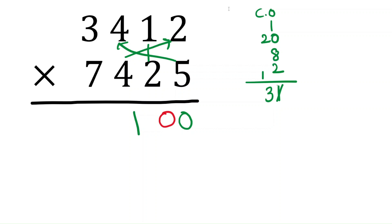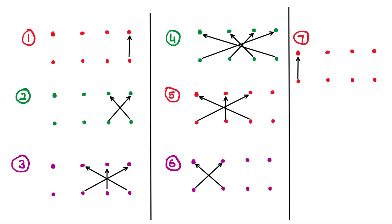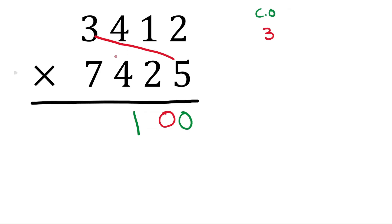Three is the carryover going into step four. In step four we multiply ones with thousands, tens with hundreds, and also include the previous results.